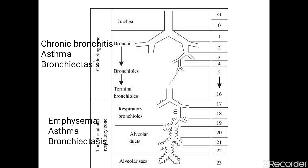We have some obstructive diseases occurring at the level of the conducting zone and others at the level of the respiratory zone. Chronic bronchitis is entirely occurring in the bronchi or bronchioles. Asthma and bronchiectasis are also in the bronchi and terminal bronchioles, but they can occur in the respiratory zone as well. Emphysema is entirely in the respiratory zone — in the alveolar ducts.